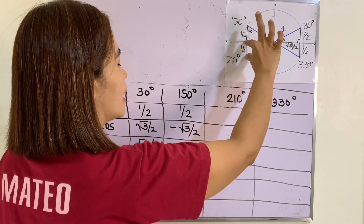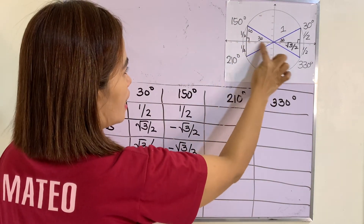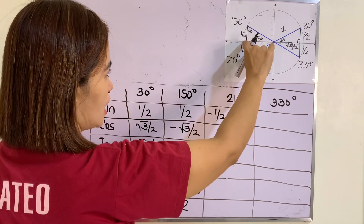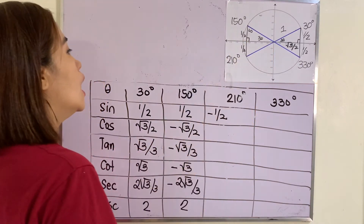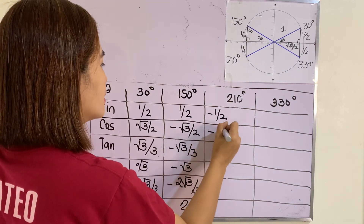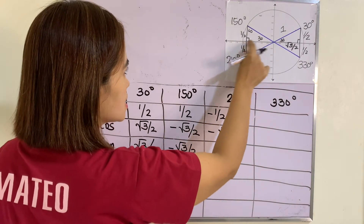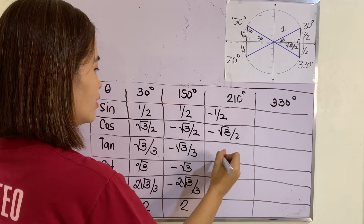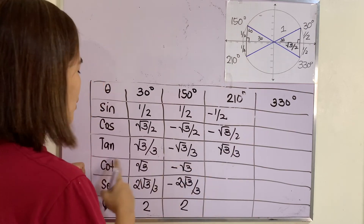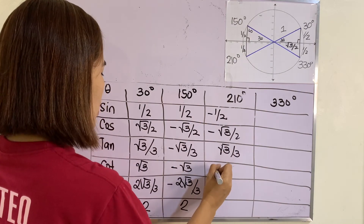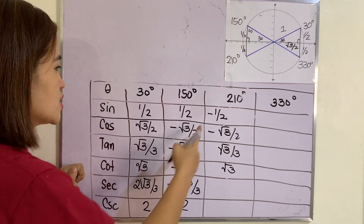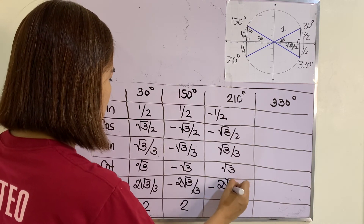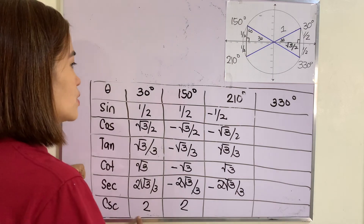For 210 degrees: both x and y are negative in the third quadrant. So sine of 210 equals negative one half, and cosine of 210 equals negative square root of 3 over 2. For tangent, negative divided by negative is positive, so tangent equals positive square root of 3 over 3. Cotangent is also positive, equaling square root of 3. Secant, the reciprocal of cosine, is negative 2 square root of 3 over 3. And cosecant is negative 2.